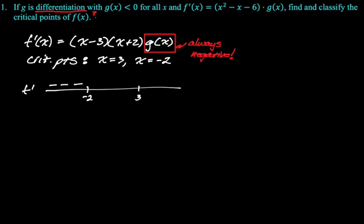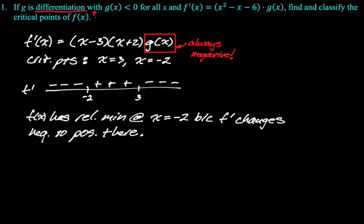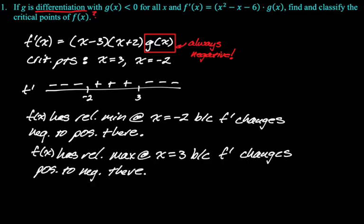-2 comes from a factor of degree 1, that's odd, so there will be a sign change. 3 comes from (x - 3) to the first, 1 is odd, there will be a sign change. So we get this. So like if it had just been (x - 3)(x + 2) it would have gone plus minus plus, but g(x) is flipping all the signs because g(x) is always negative. All right, so there's definitely a relative min at -2 because f' goes negative to positive there. There's definitely a relative maximum at 3 because f' goes from positive to negative there. All right, and we're good. Next problem.